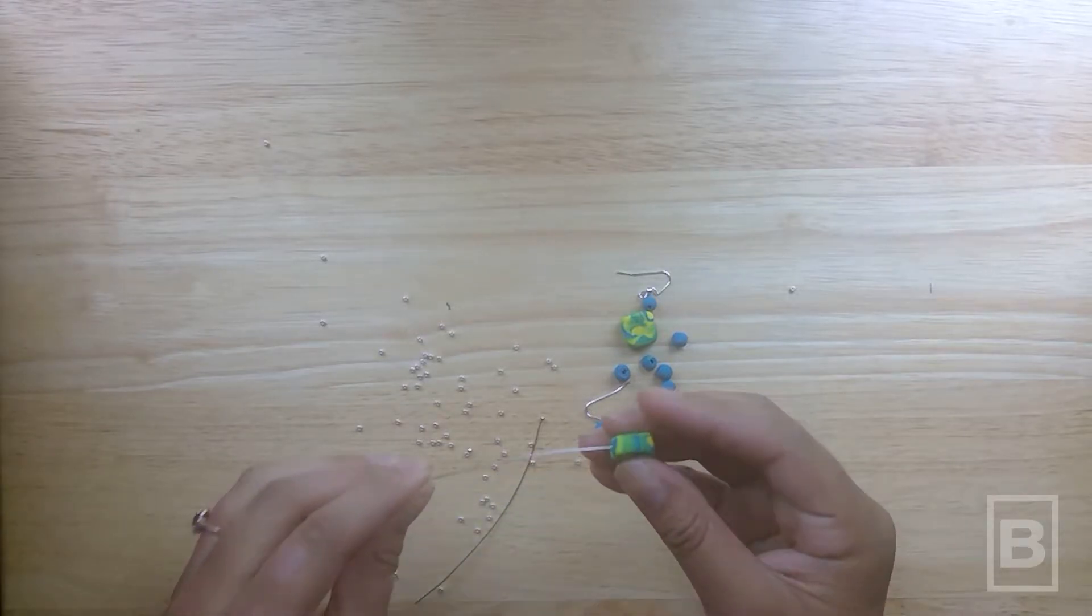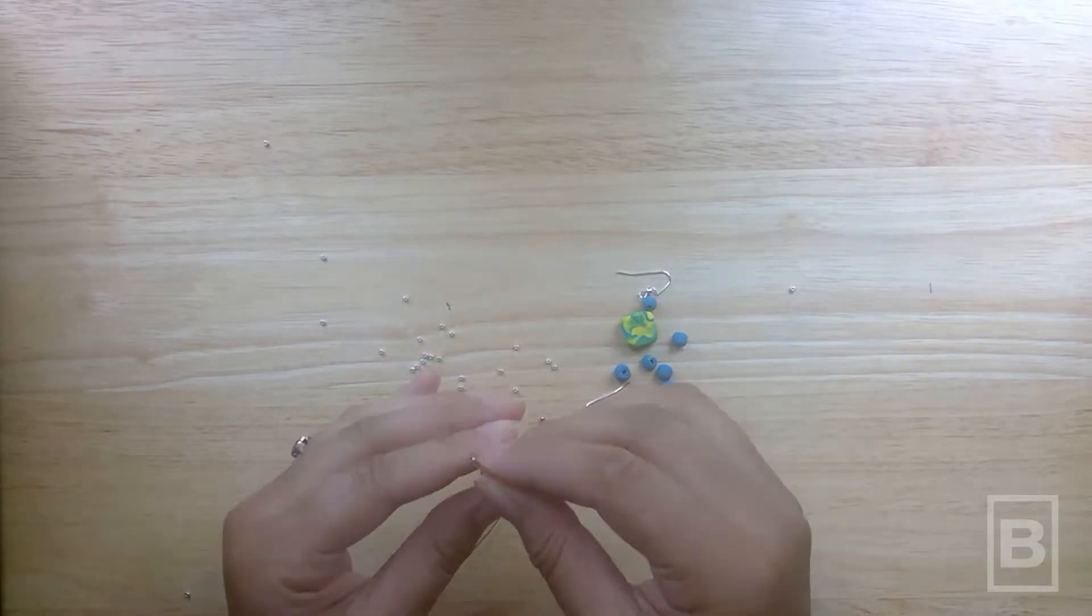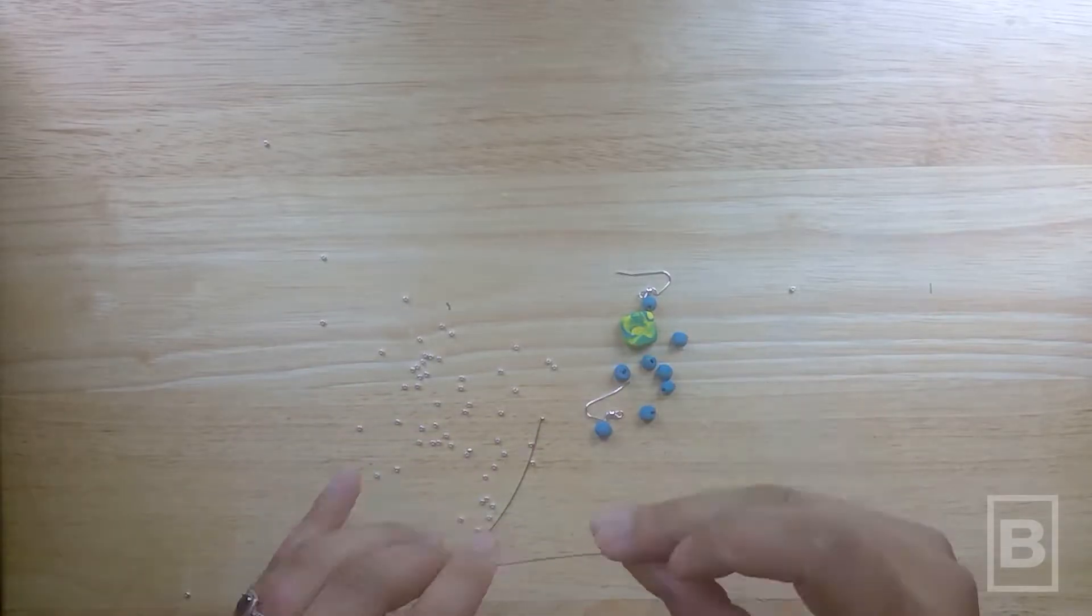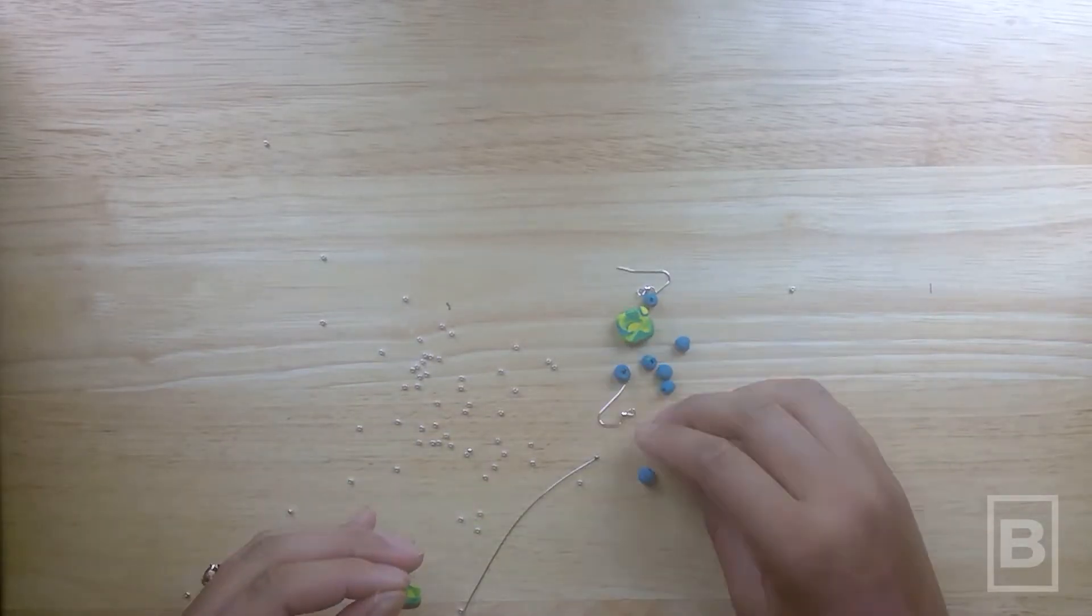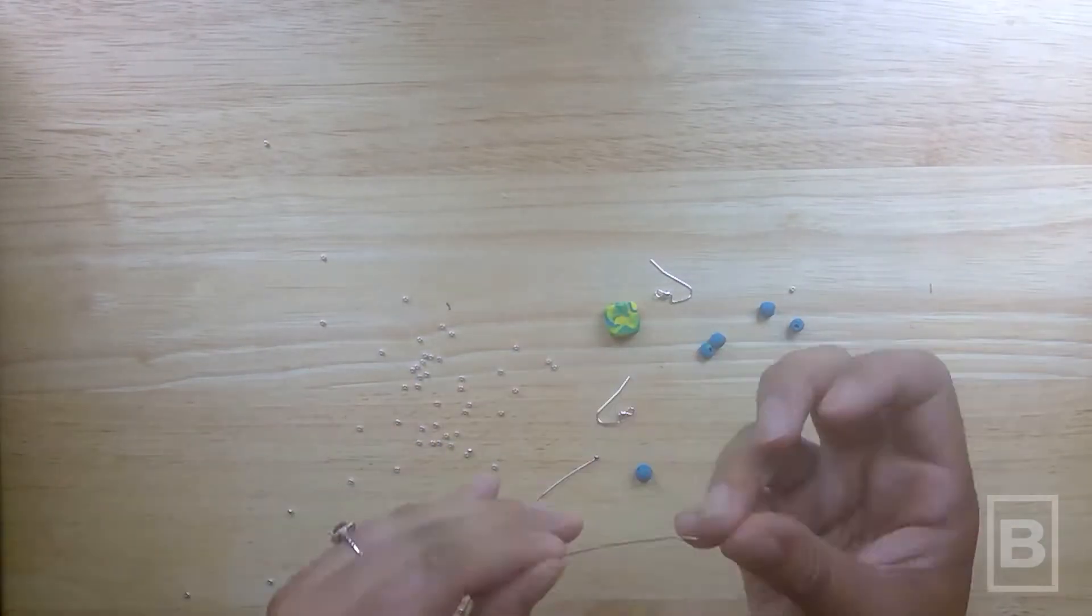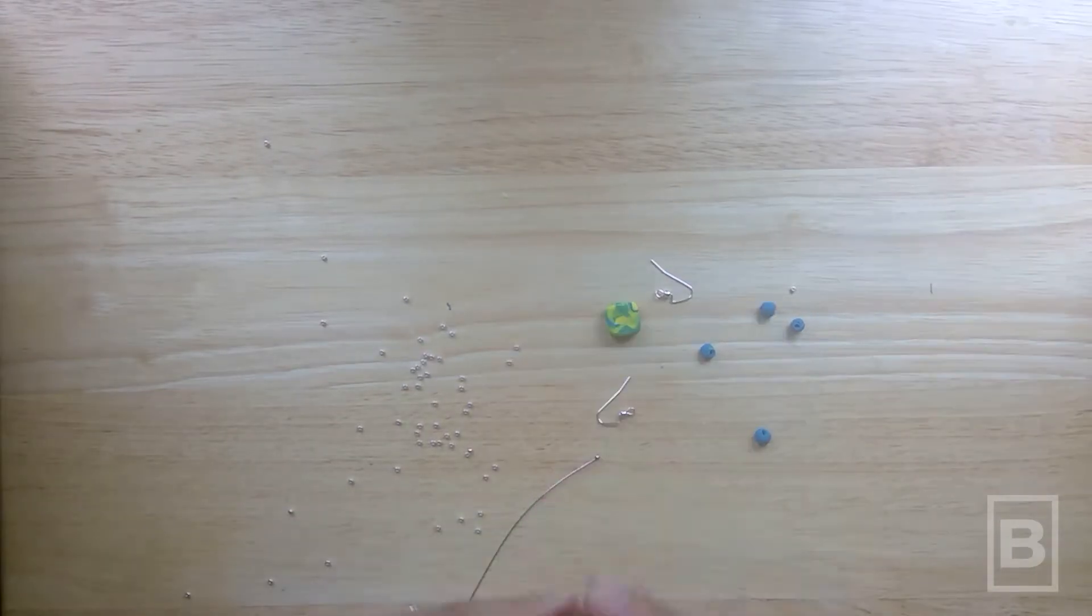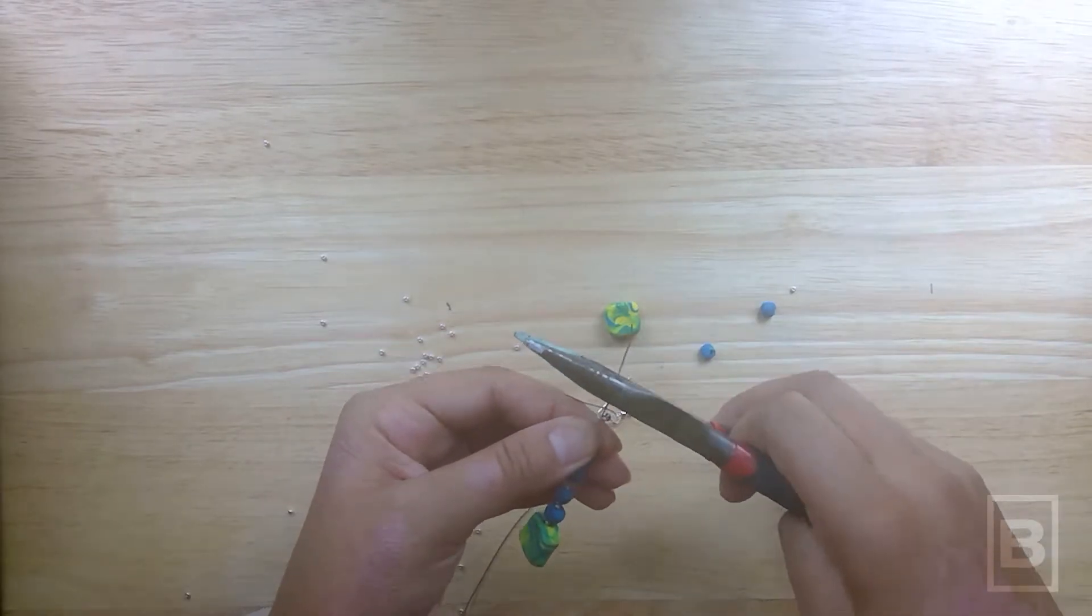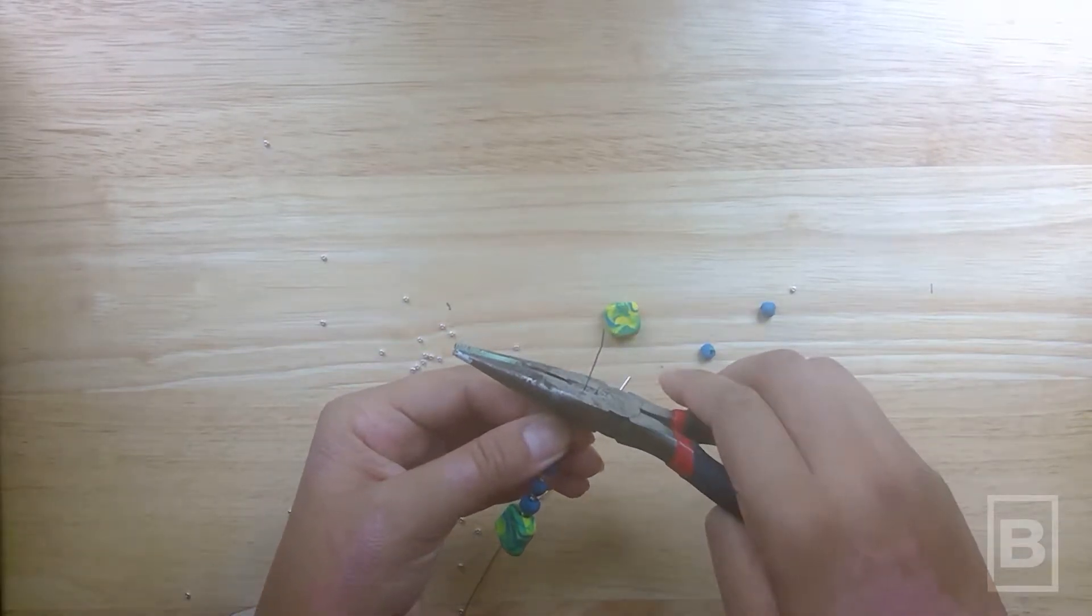Plan your bead pattern and then begin placing your beads onto the head pin. After you have finished adding your beads, use the pliers to cut away any excess wire but leave about a half an inch.